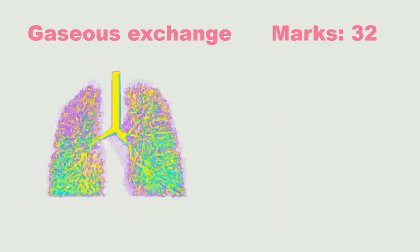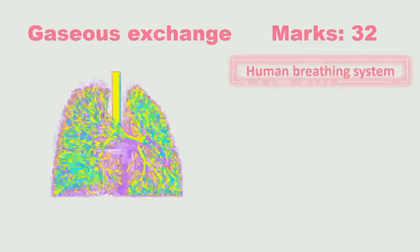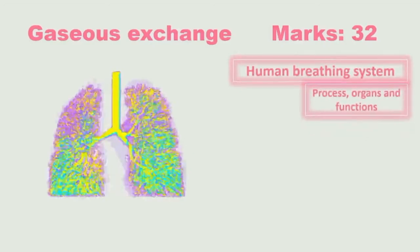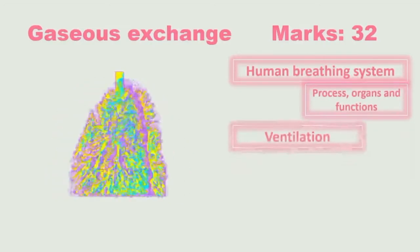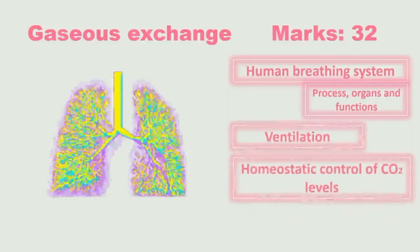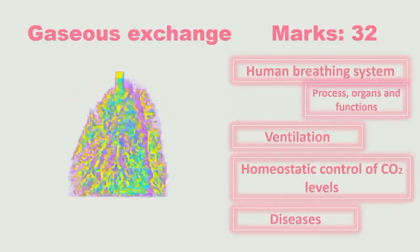The next topic is gaseous exchange, which is a mark allocation of 32. We will look at the human breathing system, the processes, the organs involved and the functions. We'll look at the ventilation of the lungs, the homeostatic control of carbon dioxide levels, and then we'll also look at the diseases.